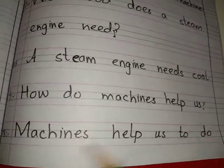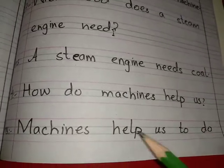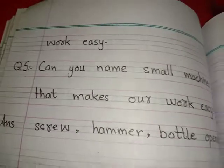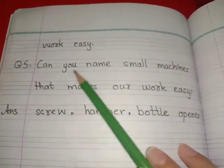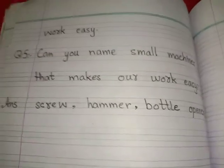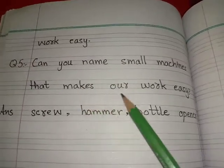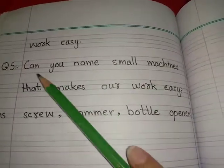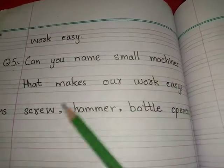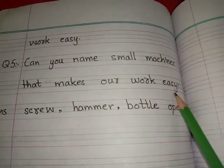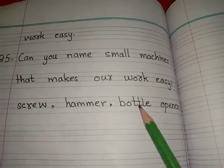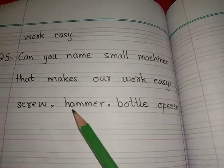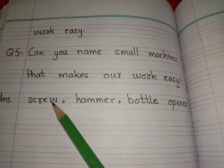Question number five: Can you name small machines that make our work easy? Answer: Screw, hammer, bottle opener. Kaun kaun si machine hai jo hamara kaam easy karti hai — screw, hammer, bottle opener.